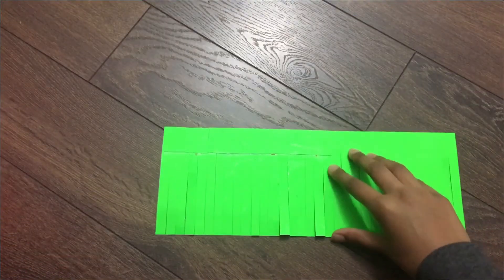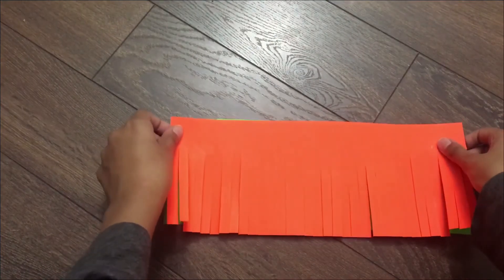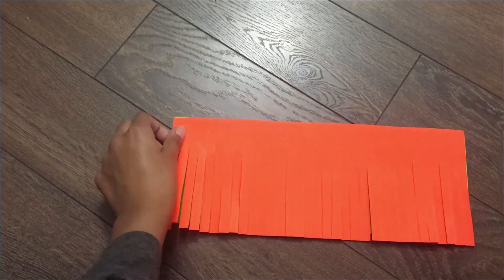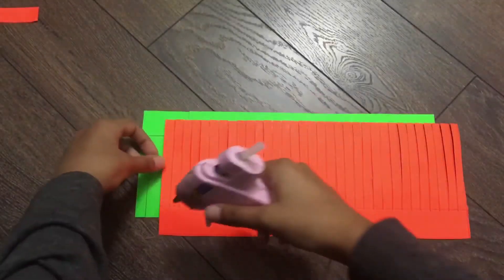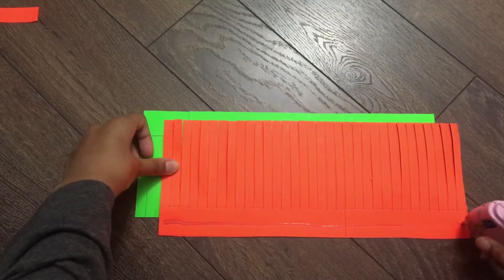So now what we're gonna do is glue the orange part on top of the green part and only glue the two centimeter block that we left. So as you can see I'm only putting glue on the two centimeter block.